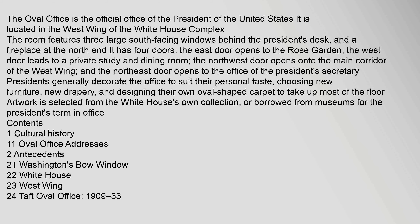The Oval Office is the official office of the President of the United States. It is located in the west wing of the White House complex. The room features three large south-facing windows behind the President's desk and a fireplace at the north end. It has four doors: the east door opens to the Rose Garden, the west door leads to a private study and dining room, the north-west door opens onto the main corridor of the west wing, and the north-east door opens to the office of the President's secretary.